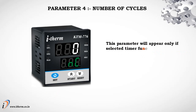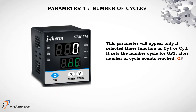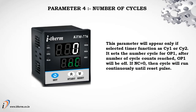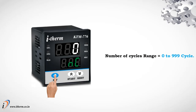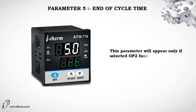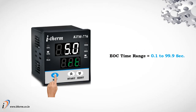Parameter 4: Number of Cycles. This parameter appears only if the timer function is Cycle 1 or Cycle 2. It sets the number of cycles for Output 1. After the count is reached, Output 1 will turn off. If Number of Cycles equals 0, the cycle runs continuously until a reset pulse. Range: 0 to 999 cycles. Parameter 5: End of Cycle Time — appears only if Output 2 function is set to End of Cycle. Range: 0.1 to 99.9 seconds.